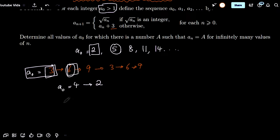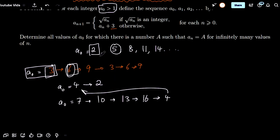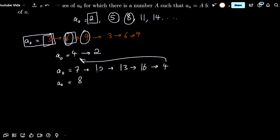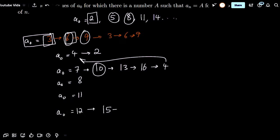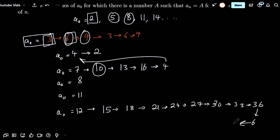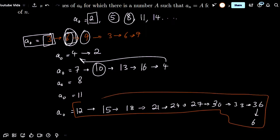If we try a0 equals 7: not a square, so 10, then 13, then 16, then 4 — which seems to keep going forever. a0 equals 8 is the same situation. a0 equals 9 repeats as before. a0 equals 10 keeps going. a0 equals 12 gives 15, 18, 21, 24, 27, 30, 33, 36, and then goes to 6 — which repeats. So all those members in that cycle are also valid values of a0.